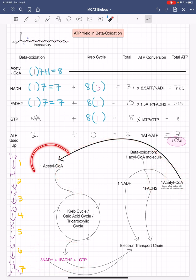For each molecule of acetyl CoA that enters the Krebs cycle, it will produce three molecules of NADH, one molecule of FADH2, and one molecule of GTP.